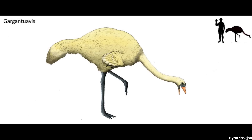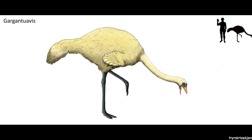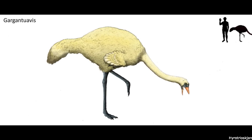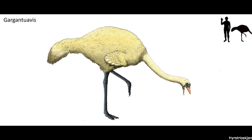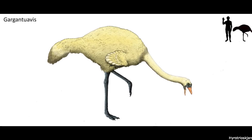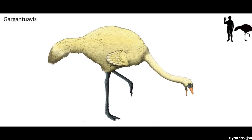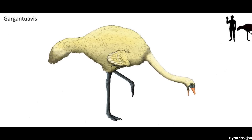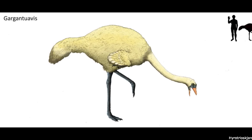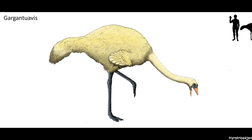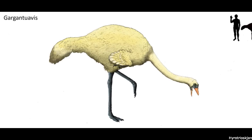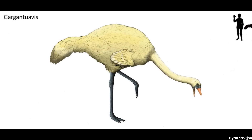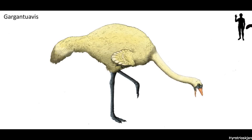However, perhaps the oddest of these basal Ornithurines was Gargantuavis from the Campanian and early Maastrichtian of France, Spain and Romania. Known from very partial remains consisting of femurs, neck vertebrae and pelvises, this was the largest Cretaceous avian so far described, being about the size of a female ostrich and potentially weighing up to 141kg or 311lbs.